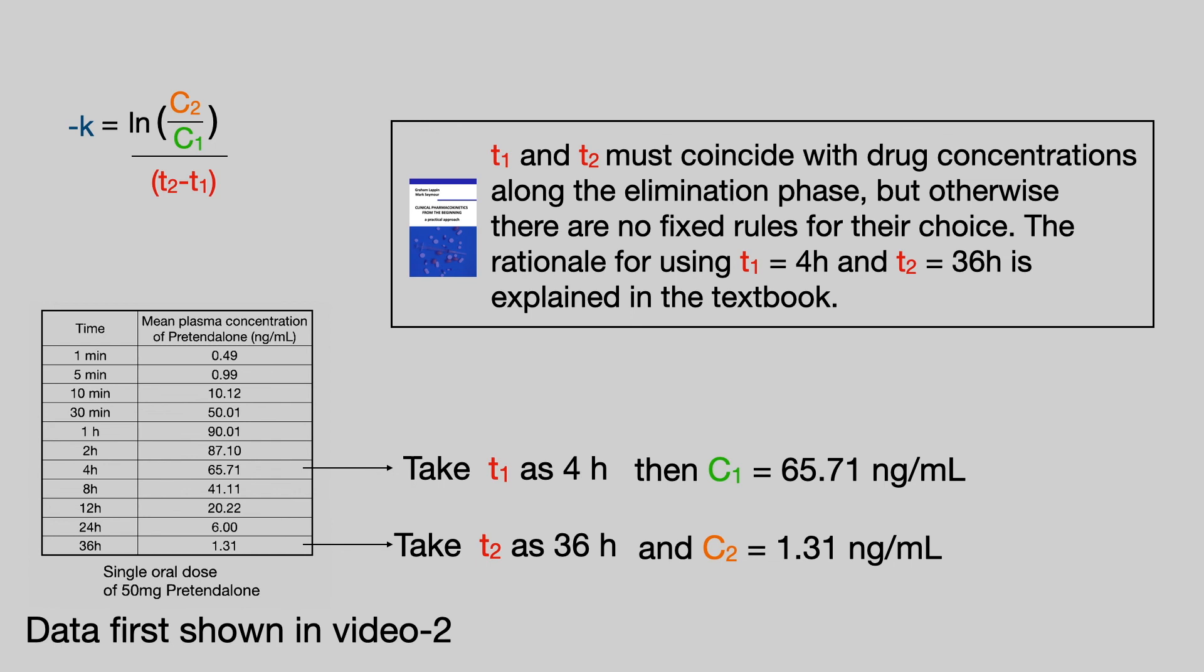The rationale for choosing T1 and T2 is explained further in the textbook. We're not going to go into that now. What we'll do is we'll use those values to calculate the elimination rate constant.